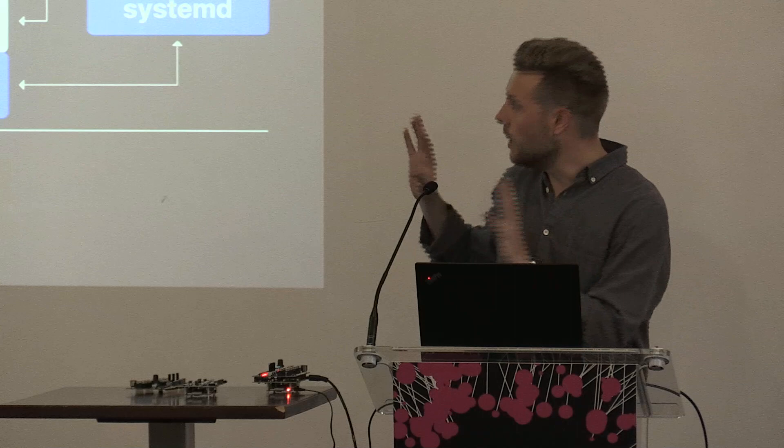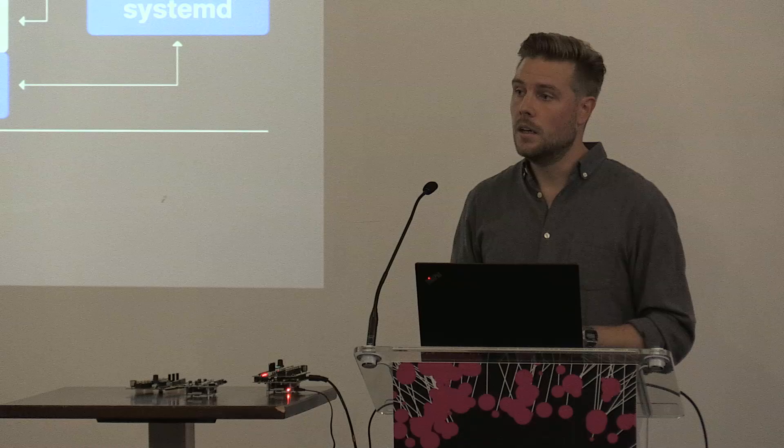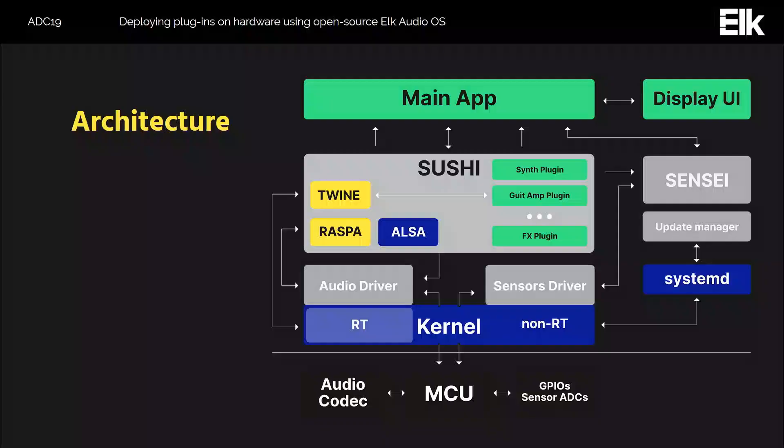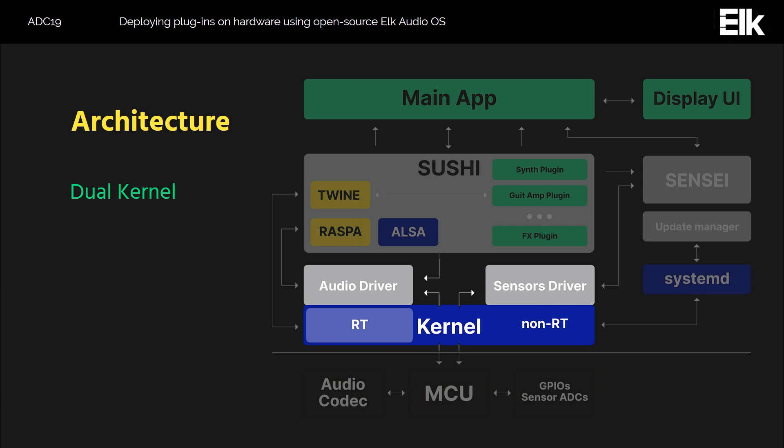Now for a look at what is under the hood of Elk. This is a diagram of the main components that make up Elk. The parts in blue are provided by the underlying Linux distribution. The grey and yellow parts are components provided by Elk. To make a complete musical device you also need to supply the parts shown in green. At the bottom we have the dual kernel setup — a Xenomai real-time kernel running side by side with the Linux kernel, where audio processing happens in the real-time kernel.